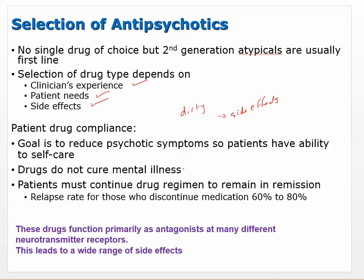Drugs don't cure schizophrenia — they treat it. Schizophrenia doesn't go away; you're just controlling the symptoms. Patients must continue the drug regimen to remain in remission. In 60% to 80% of cases, if they go off the medication, symptoms will return. The movie 'A Beautiful Mind' depicted John Nash managing to overcome his symptoms, but that's not very common.